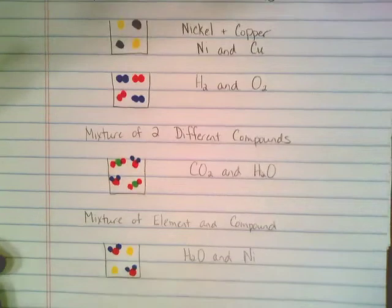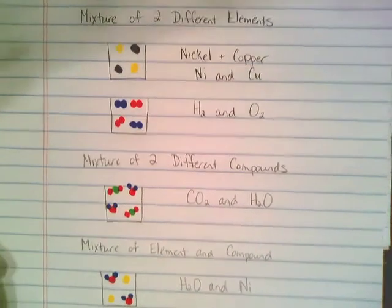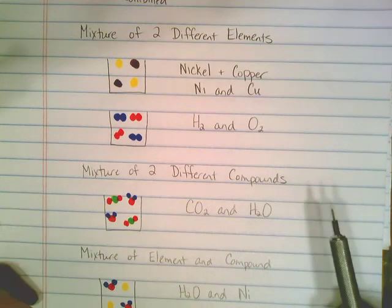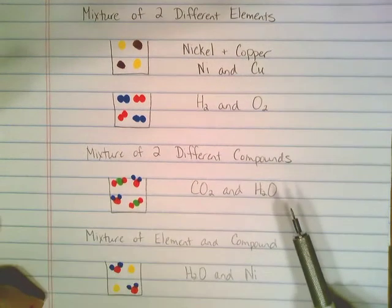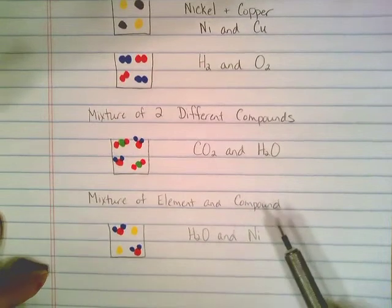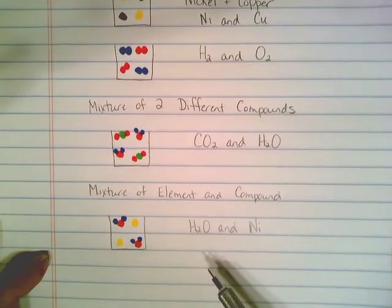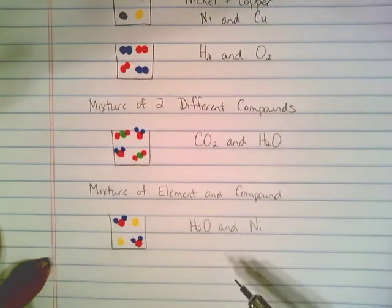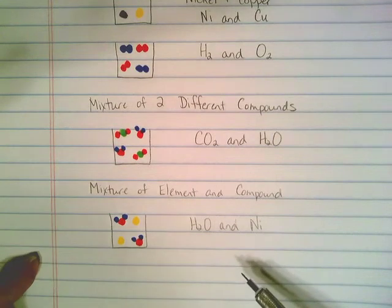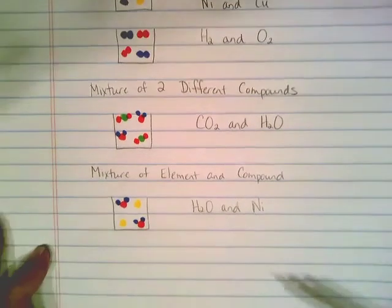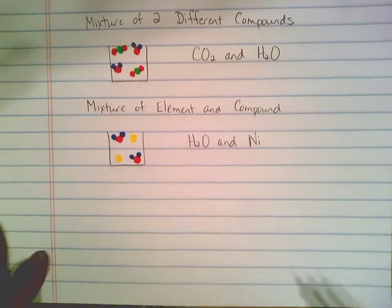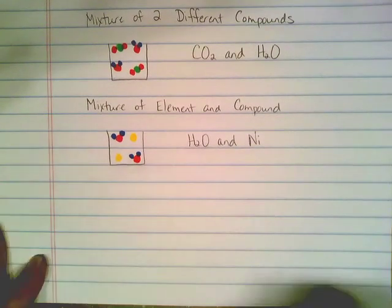Because there are so many different combinations you can have to make a mixture — you can combine elements together physically, combine compounds together physically, or combine elements and compounds together in the same container. Just about everything you could possibly imagine: you throw two things together and you suddenly have a mixture. So scientists break this down into just a couple more categories for that mixture category.